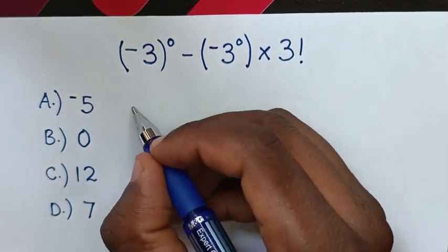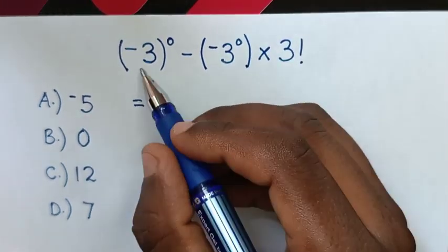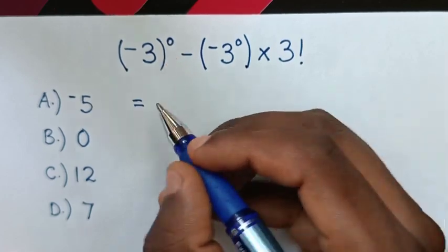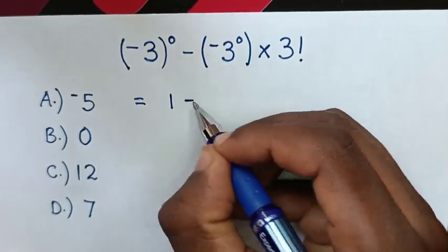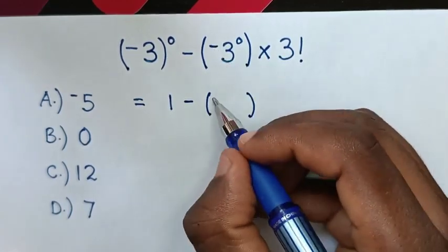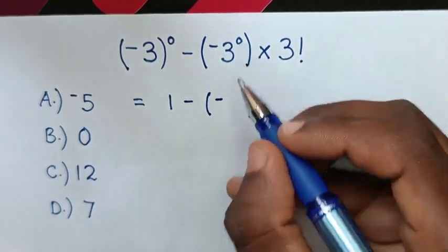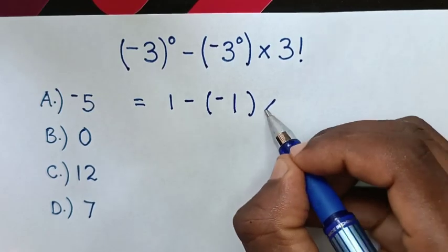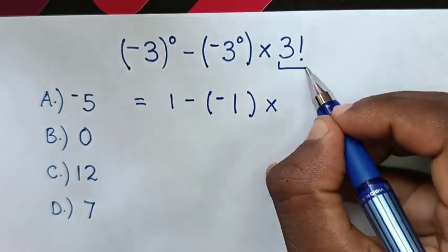So, from this expression, it will be equal to negative 3 power of 0 is 1, then minus brackets. Here, inside the bracket, there is negative, then 3 power of 0 is 1, then times this 3 factorial.